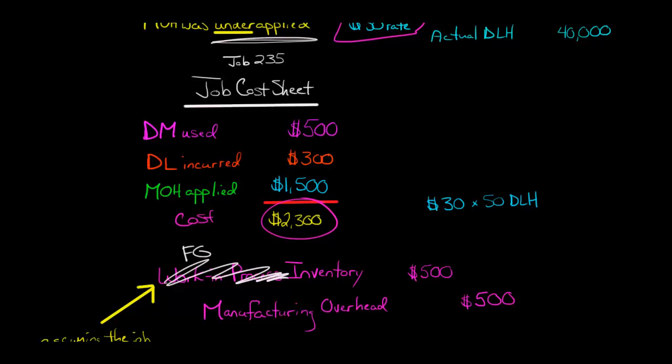Now, final example. Let's say that this was not a finished good. It was no longer in process, and it wasn't a finished good either because it already went through finished goods and you sold it. In that case, you would debit cost of goods sold for $500 and then credit manufacturing overhead.